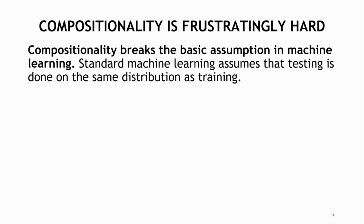Recognizing new combinations is an easy task for people, but it is frustratingly hard for machine learning models. This basically happens because compositionality breaks the basic assumption in machine learning that test data comes from the same distribution as the training data.